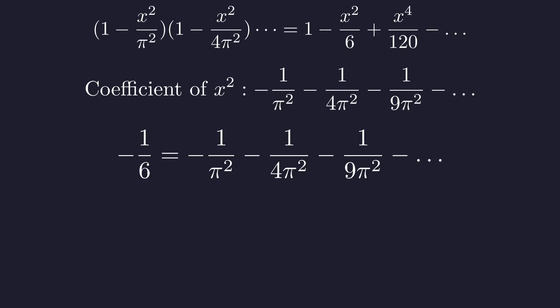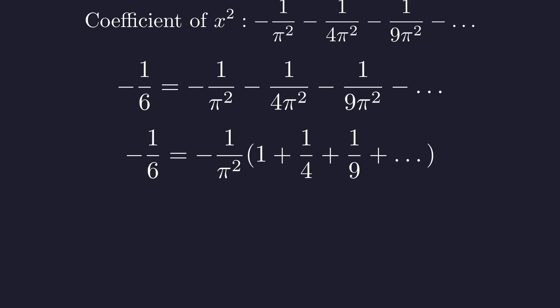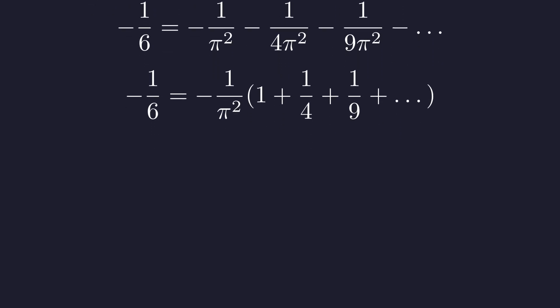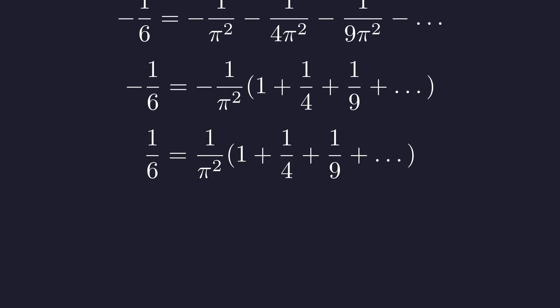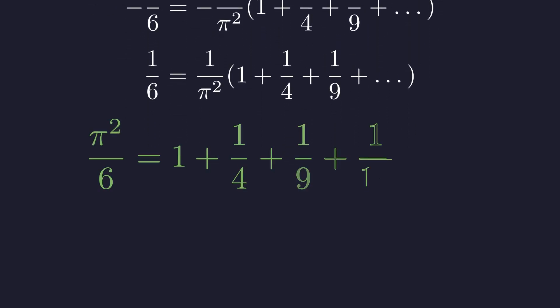Now, we equate the coefficients from both sides. We can factor out -1/π² from the right side. And look what has appeared. There. That looks much cleaner. And there it is. We have arrived at the solution to the Basel problem.